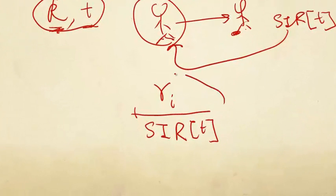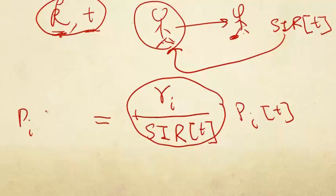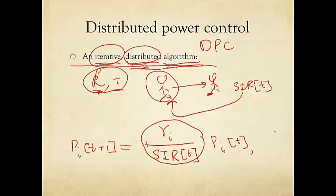And I say this is my gain parameter. I'm going to multiply my current transmit power at time t by this ratio. And that will be my transmit power at the next discrete time, t plus 1. And this is true for all the pairs i. So we use this notation, all i. And that's it. This is DPC.